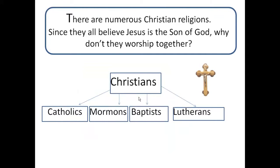Here's another example. There are numerous Christian religions. Since they all believe Jesus is the Son of God, why don't they worship together? The ruling principle is Christians, and you could divide it up into Catholics, Mormons, Baptists, Lutherans — the list goes on. Though they all believe in Jesus, they each have specific qualities unique to their faith. For example, Catholics tend to have more statues in their places of worship and include the Virgin Mary in their prayers, whereas Mormons have an American prophet. By classifying the types of Christians, people can target their specific issues to know which place of worship best fits their belief system.